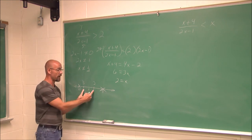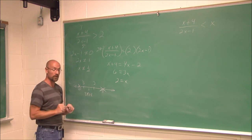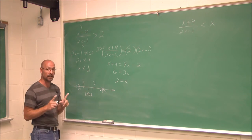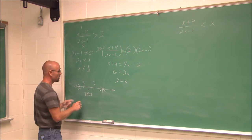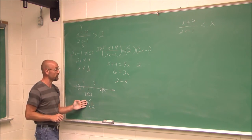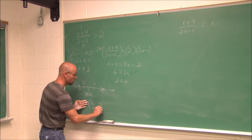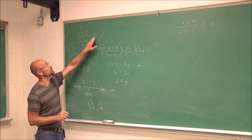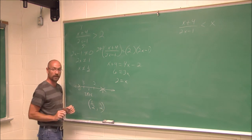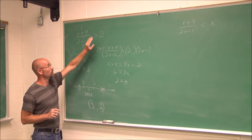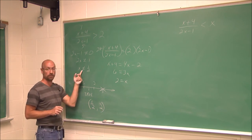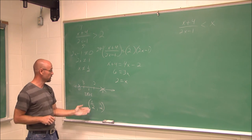Of my three intervals, I only found one to be true. I'm going to write that in interval notation. Here's where we need to be careful — domain restrictions are never included, so that's a parenthesis at 1/2. Up to 2 — is 2 included? This says it has to be greater than 2, so it's not included, and I use a parenthesis. Had this been greater than or equal to, it would have included that critical point, but never our domain restriction. So the solution is from 1/2 to 2.